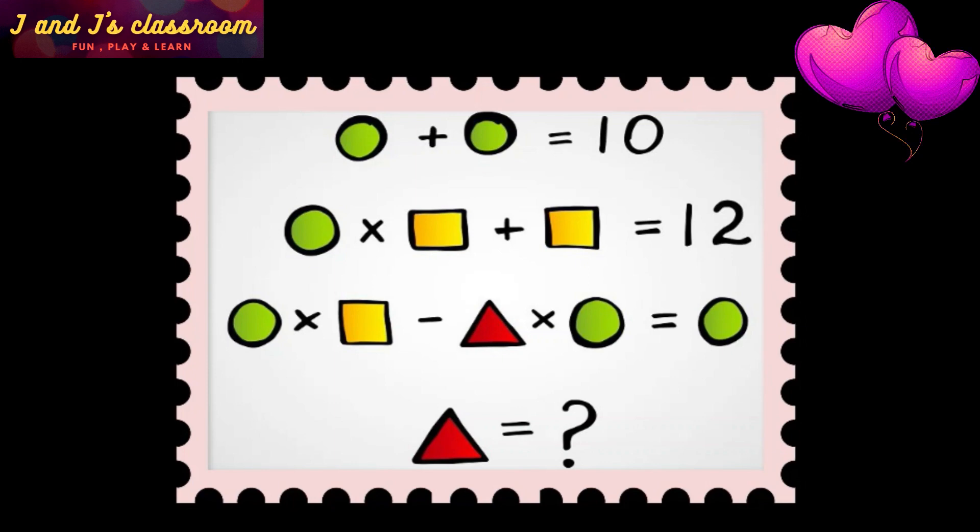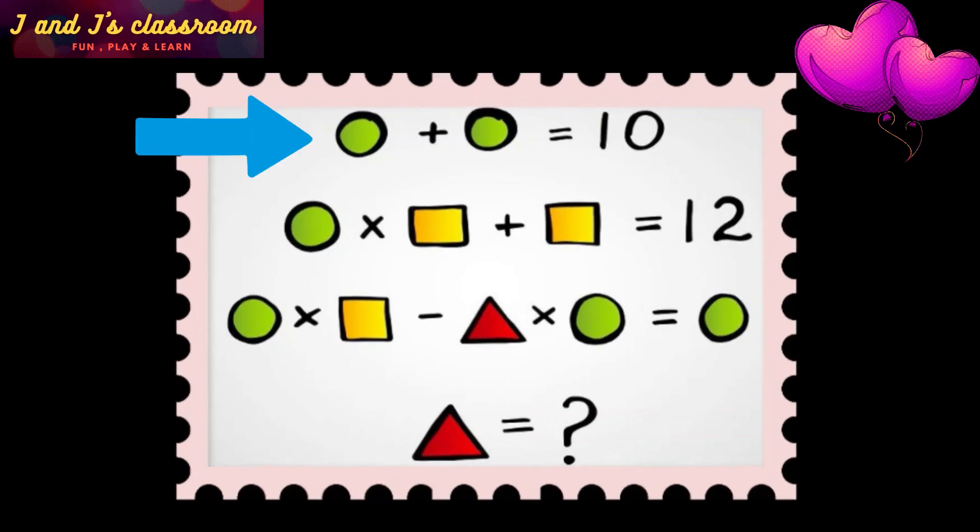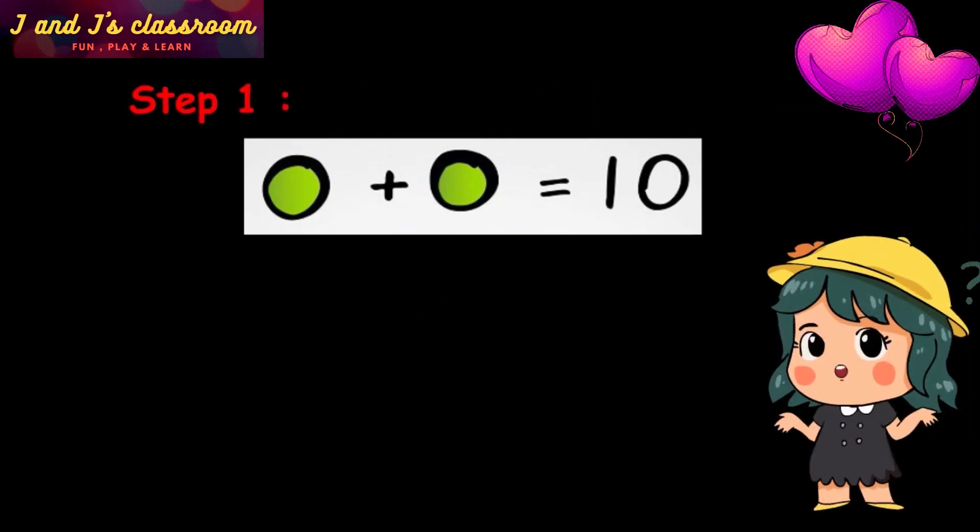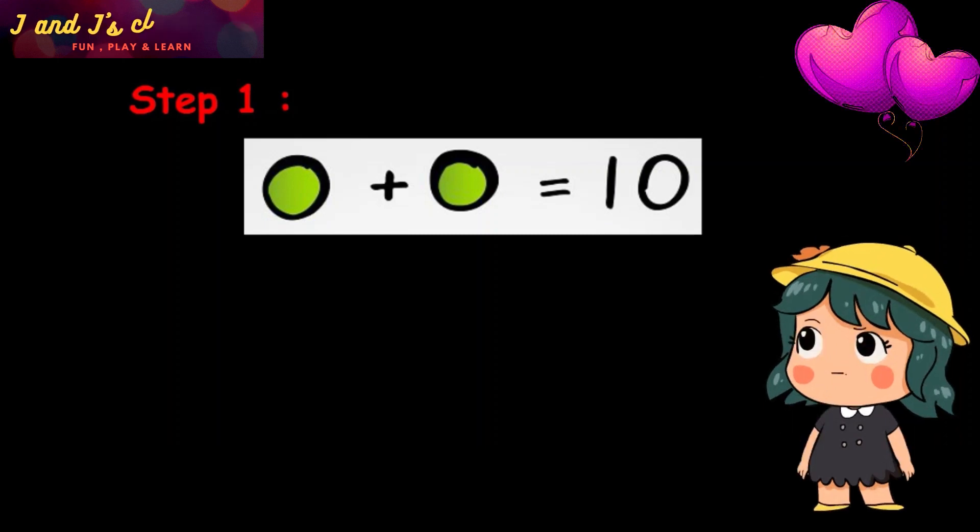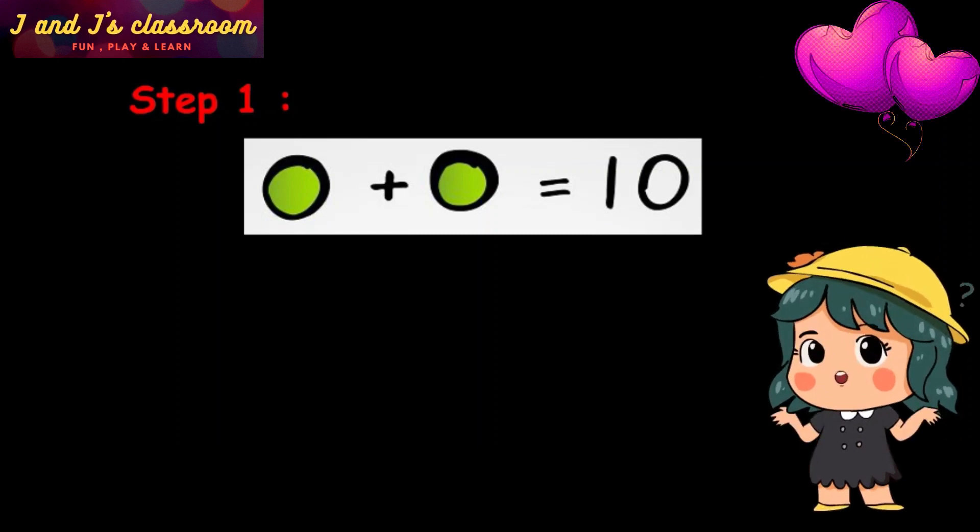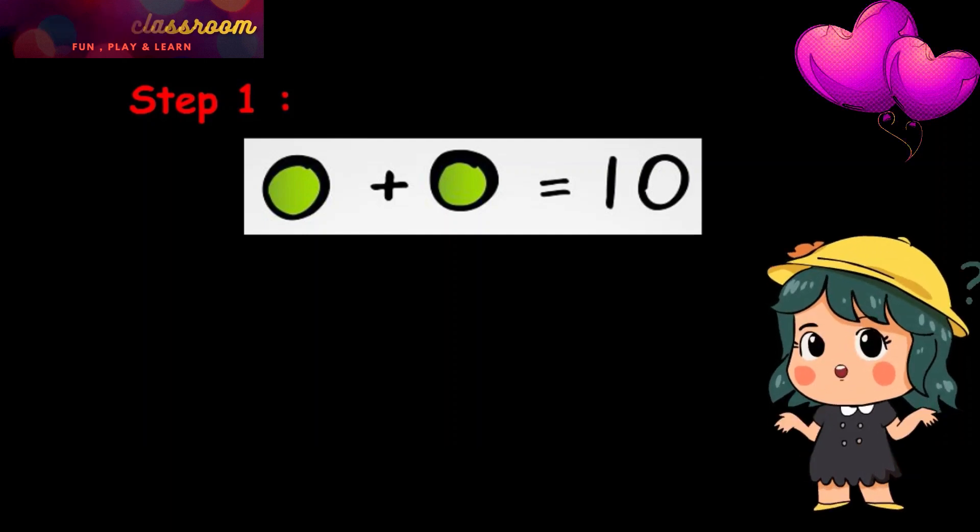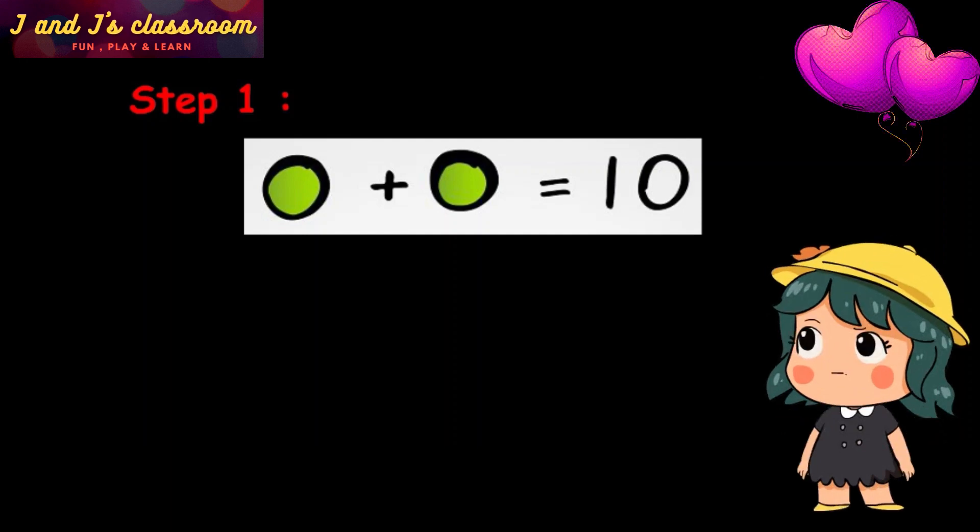First, I am going to split this Puzzle into three steps. Step 1: When we add two circles, then we get the sum 10. Here, both circles are looking the same. That means, when we add a number twice, then we get the sum 10. So let me check which value is suitable to perform this equation.